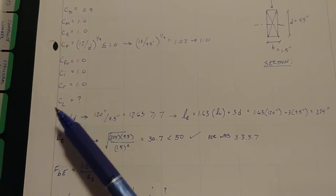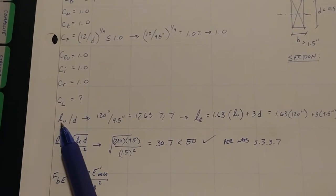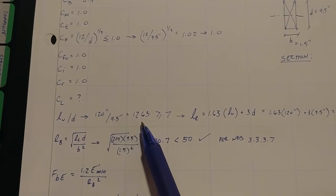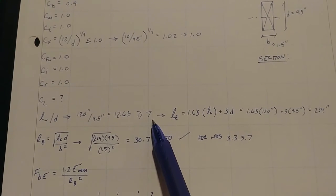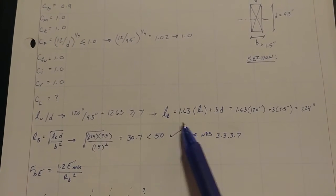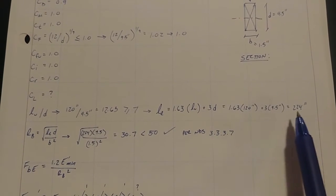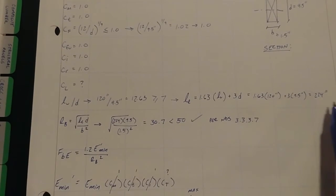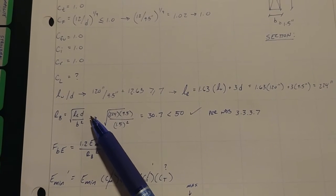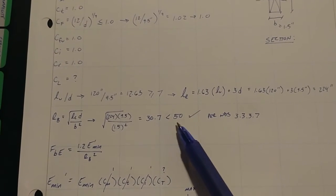So we need to figure out CL because that's probably going to reduce its strength. So you have to start by doing L over D, LU over D. So that's your unbraced length. And that gets you 12.63, which is greater than seven. So that means your effective length equals, and again, these are equations straight from the book. So you can't do this without your NDS manual. 1.63 LU plus 3D. That gets you 224 inches. That's your effective length.